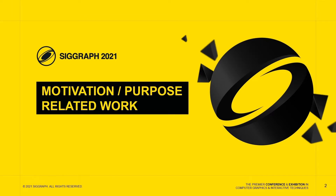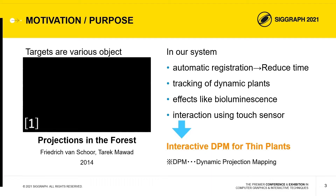At first, we would talk about our motivation, purpose, and related work. Recently, projection targets are various objects, and many projection mapping works are created. For example, in this video artwork, natural objects are projection targets. However, these artworks required considerable time to register effect animations manually in the forest.